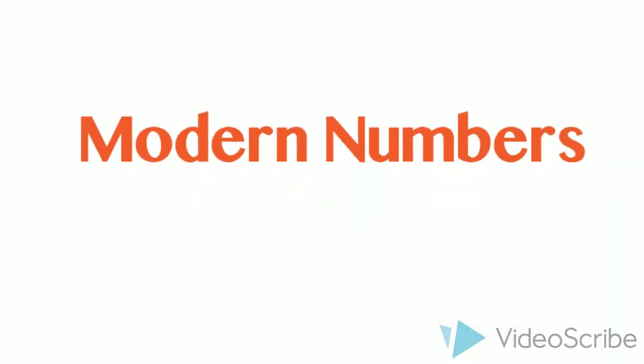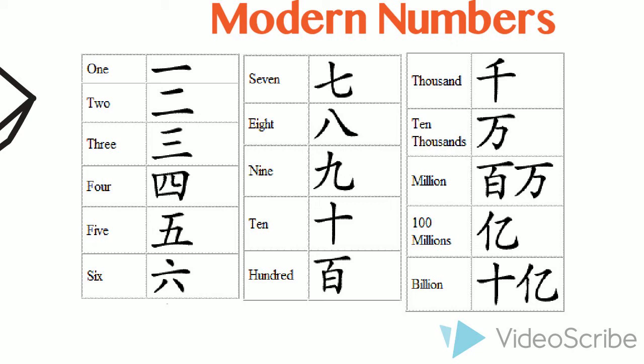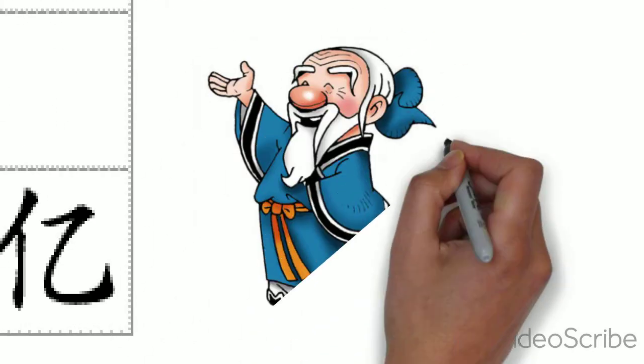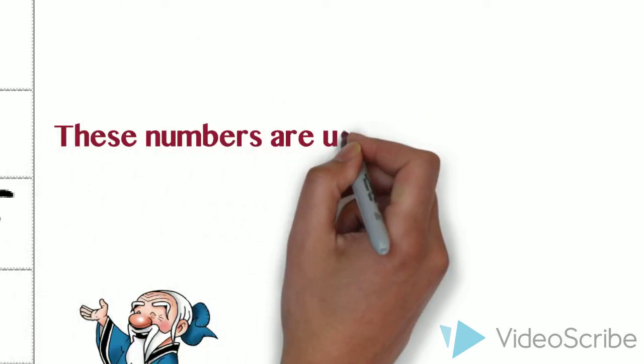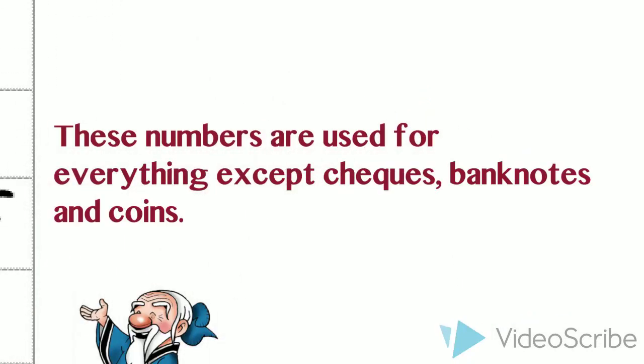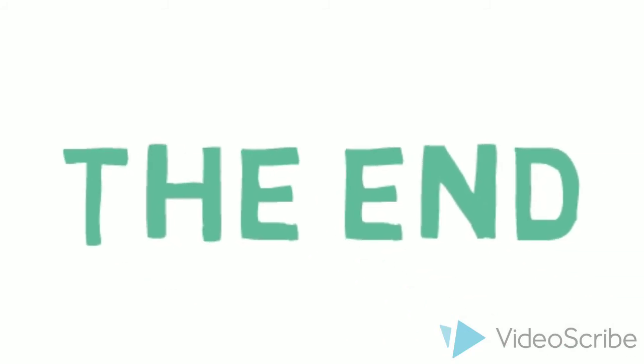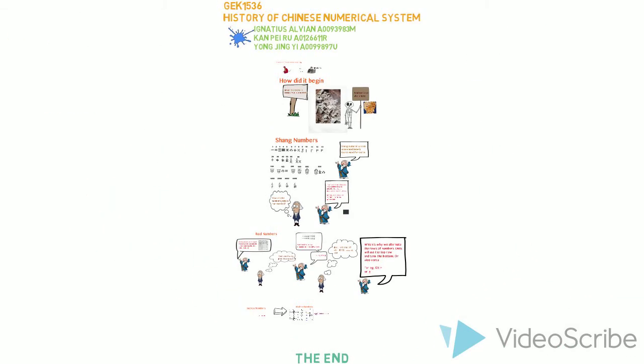This is what the modern Chinese numbers are represented as nowadays. They are used for basically almost everything. So there you have it, the history of the Chinese numeral systems. Thank you.